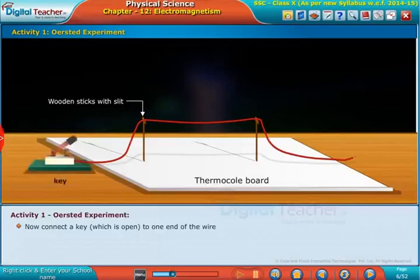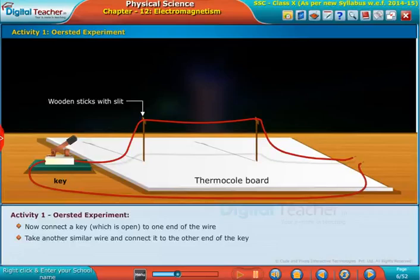Now connect the key, which is open, to one end of the wire. Take another similar wire and connect it to the other end of the key.